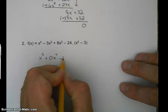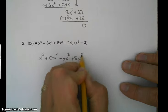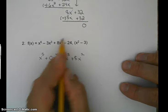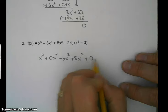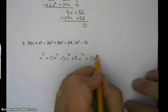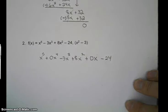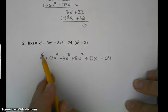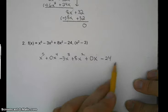minus 3x to the 3rd, plus 8x squared. Notice what's missing. The x to the 1st. So what do we put in? Yes, 0x to the 1st, minus 24. So we should see all of our exponents, starting with the degree of the polynomial, which is 5. 5, 4, 3, 2, 1, and then our constant on the end.